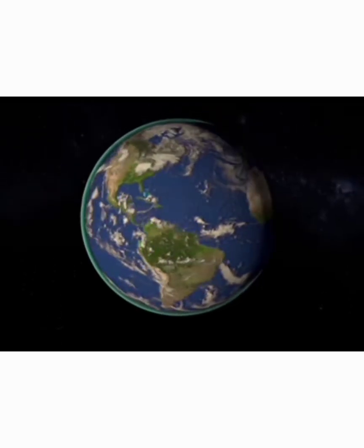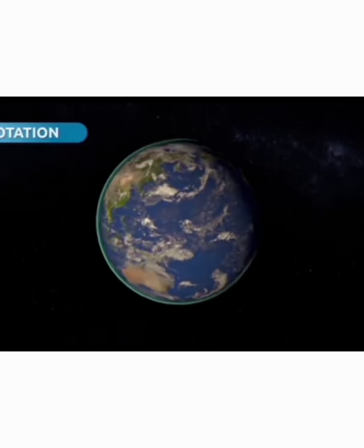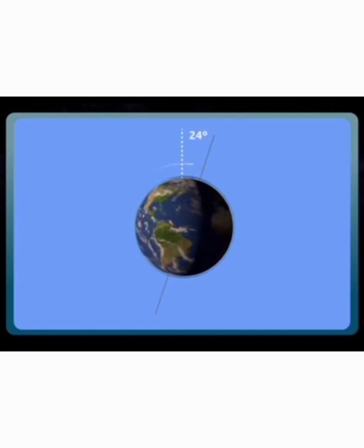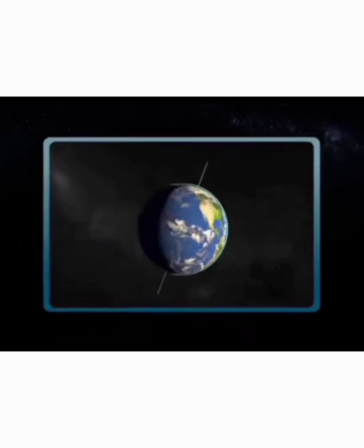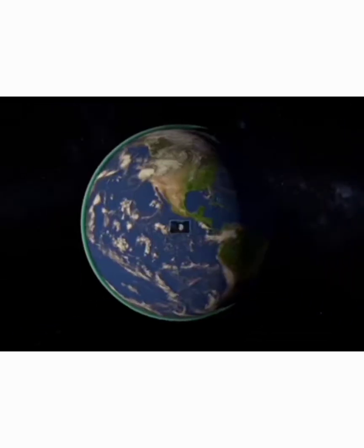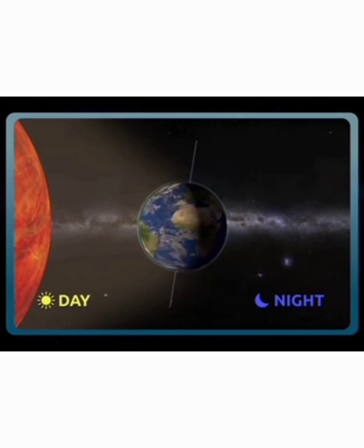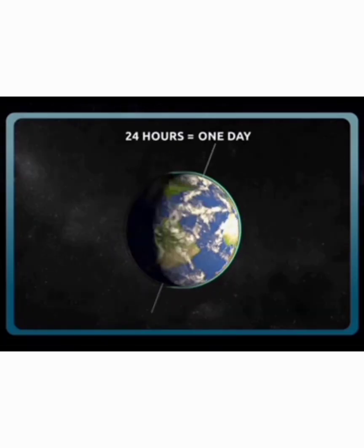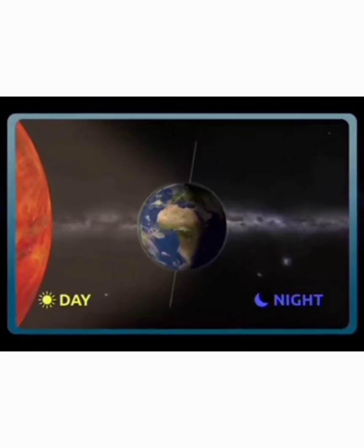Do you know how do we get day and night? Because of the rotation of Earth, we have day and night. What is rotation? The movement of the Earth on its own axis is known as rotation. The Earth's axis is an imaginary line that runs through the poles of the Earth. Earth revolves on its axis and it takes 24 hours for one rotation.